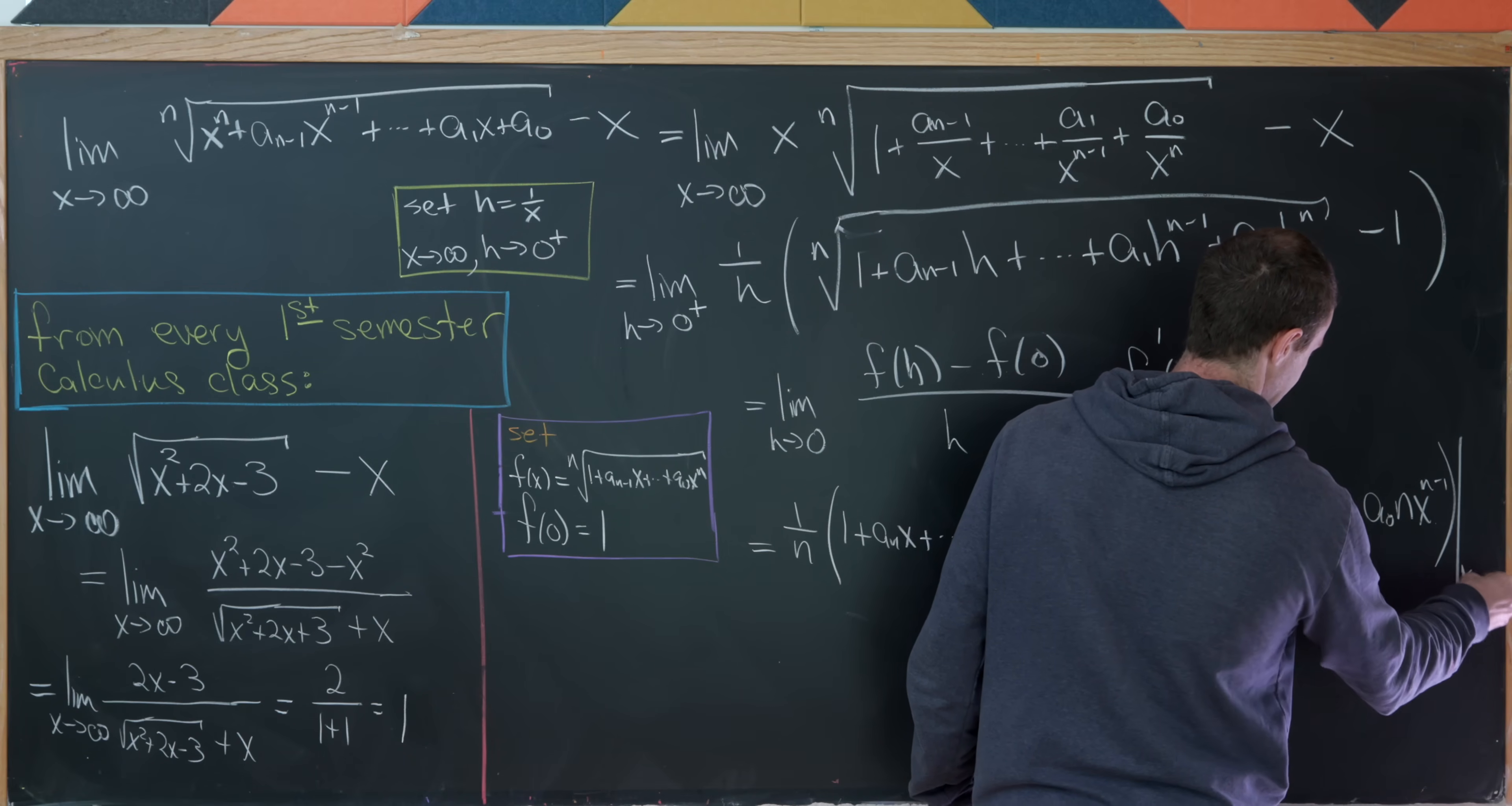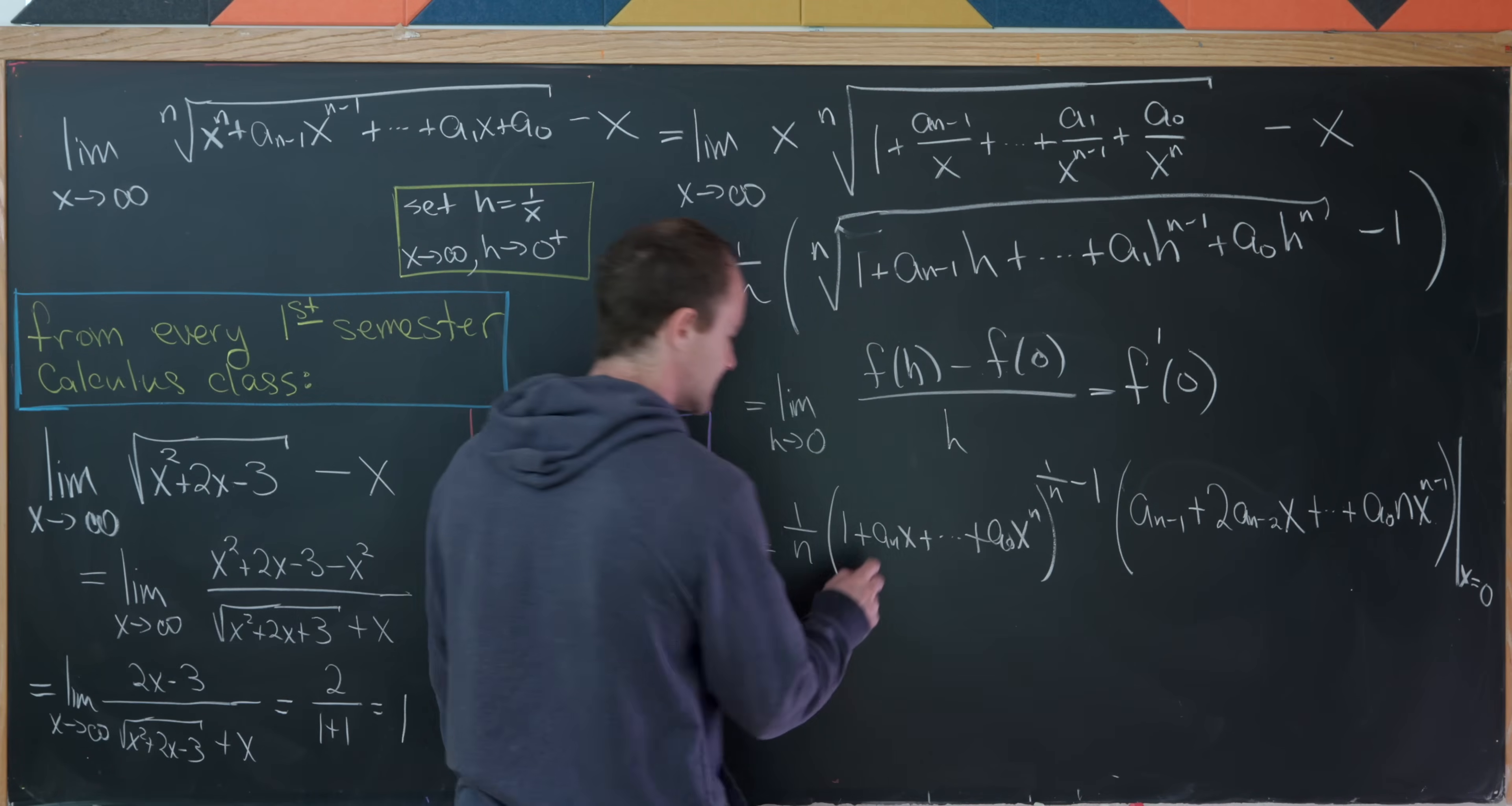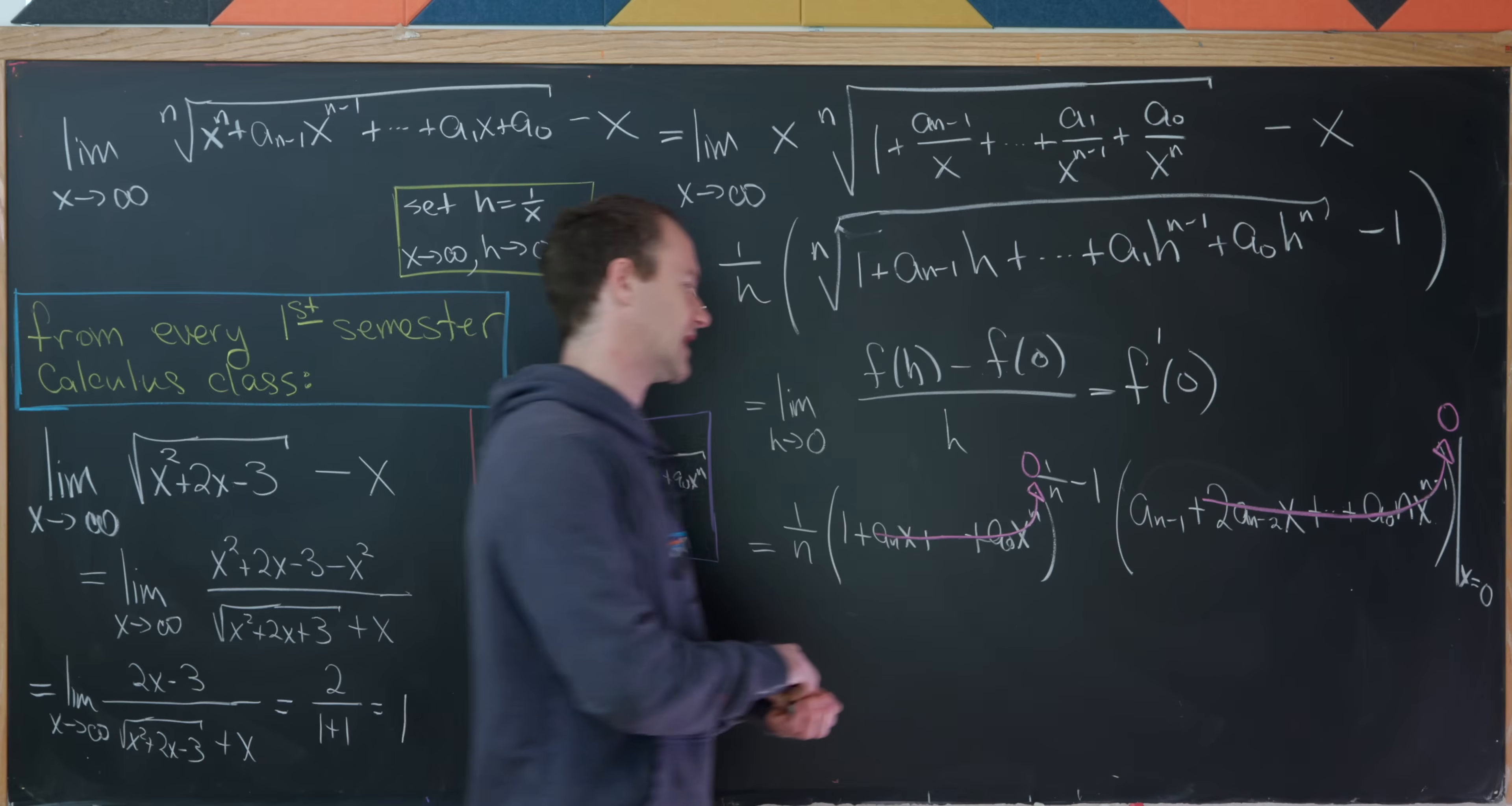And then plus all the way down to a0 times n times x to the n minus 1. And then we have to evaluate that at x equals 0 because this is the derivative at x equals 0. Okay, so let's see what's left over when we evaluate this at x equals 0. And what's nice is a bunch of stuff cancels. So all of this stuff will go to 0 once we plug in x equals 0, and all of this stuff also goes to 0 once we plug in x equals 0.